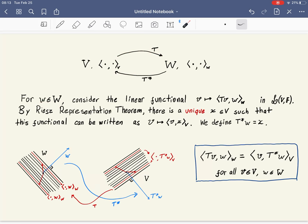For every vector w in W, we can consider this functional. What's this functional? We take some vector v, we apply T to it, and then we take inner product with w. This is a linear function, it takes vectors from V and it outputs some numbers, and it's linear.